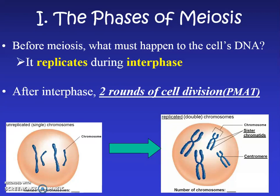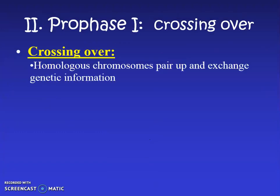After interphase, where the DNA replicates, meiosis occurs a little differently than mitosis — because there are actually two rounds of division, two rounds of PMAT. So let's learn about those two different rounds of PMAT, after we first zoom into an important part of one of those stages.